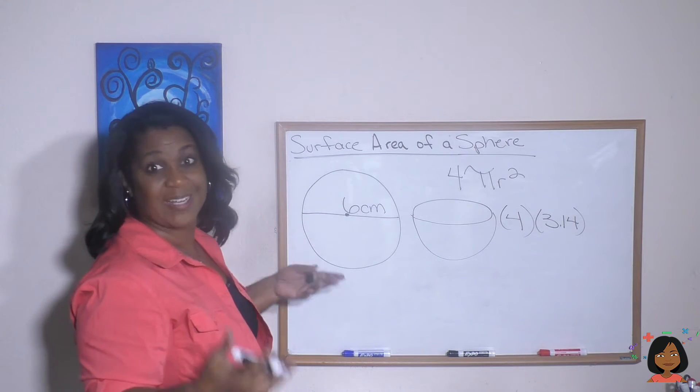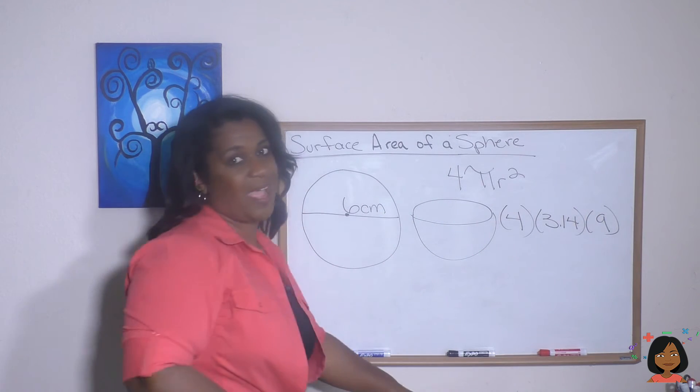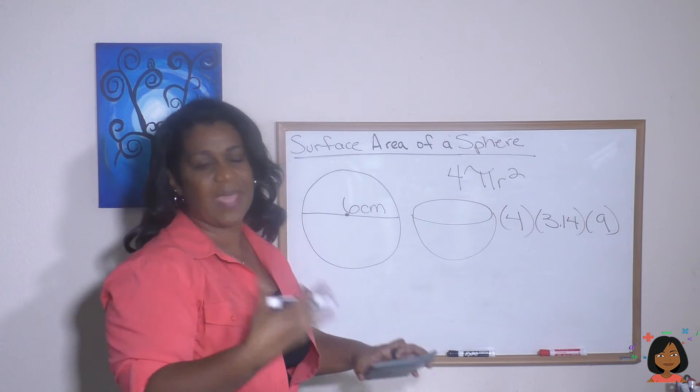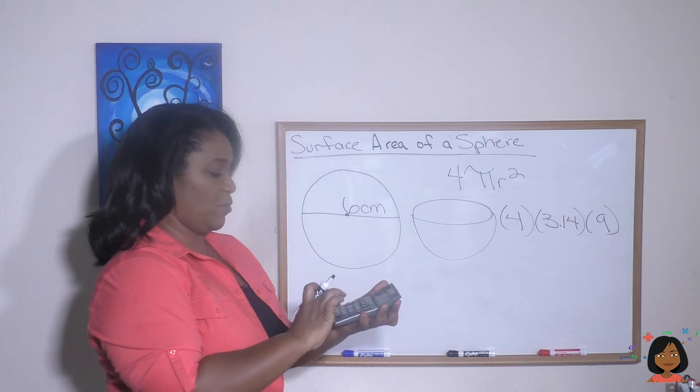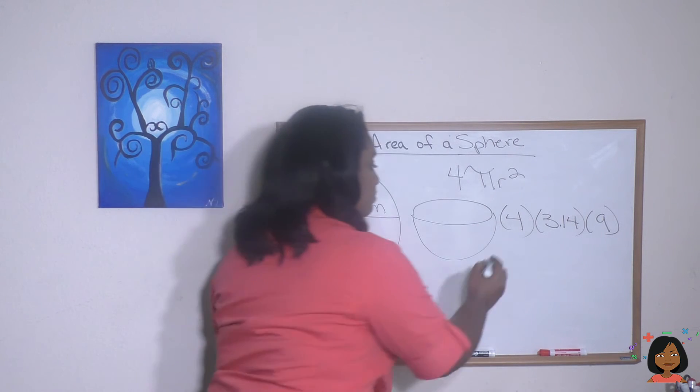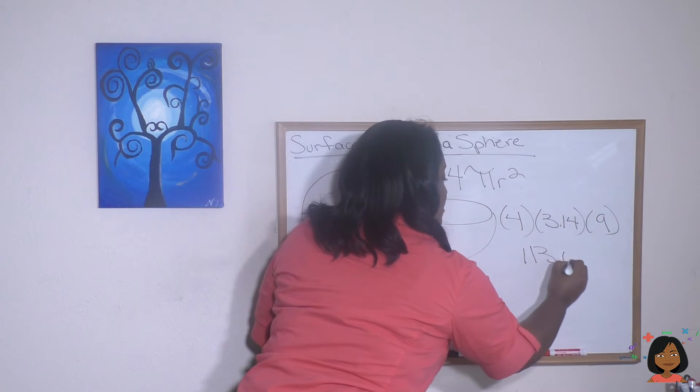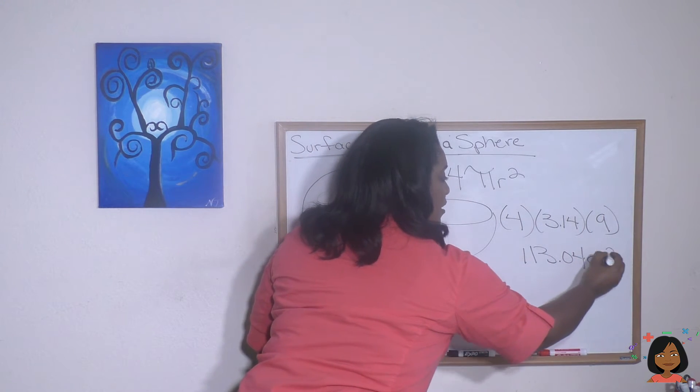3 squared, which is 3 times 3, is 9. And I'm going to let you use your calculators for this because it makes your life and my life a little easier. Here we go: 4 times 3.14 times 9 is 113.04 centimeters squared.